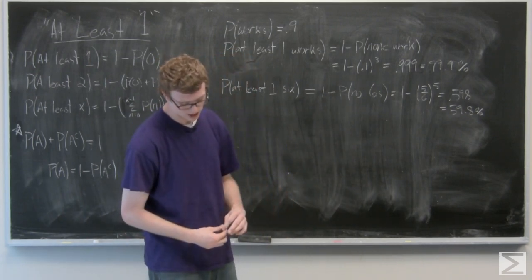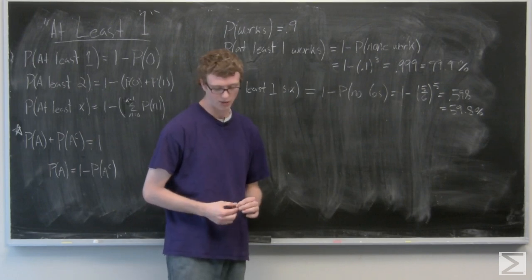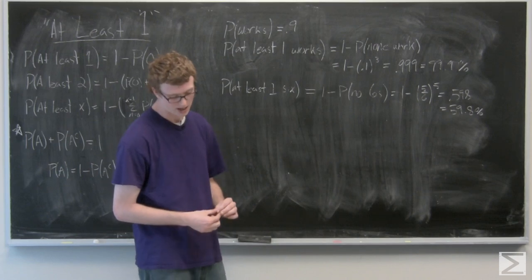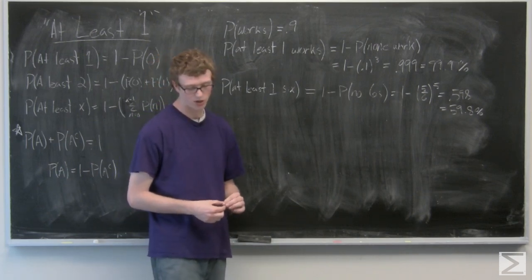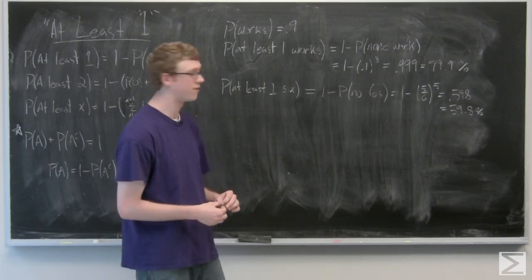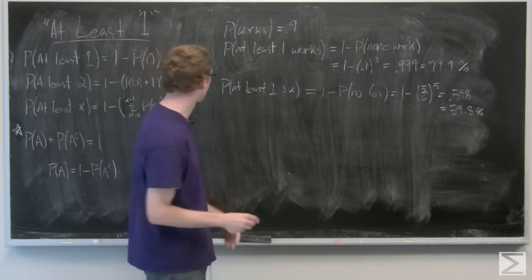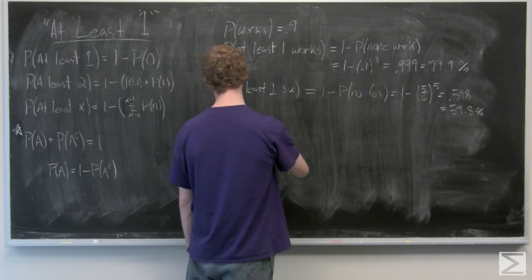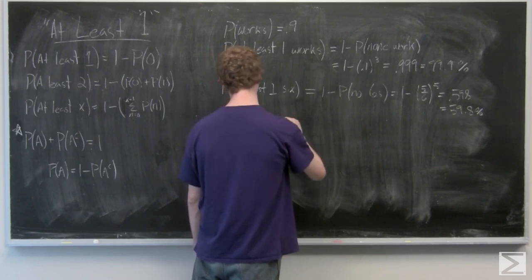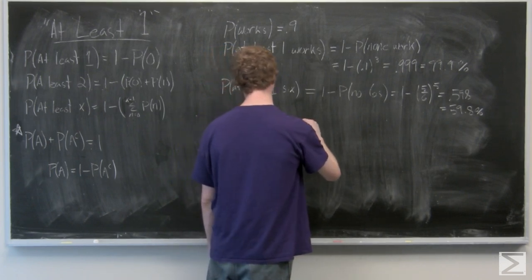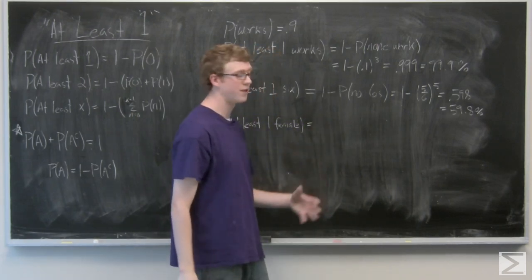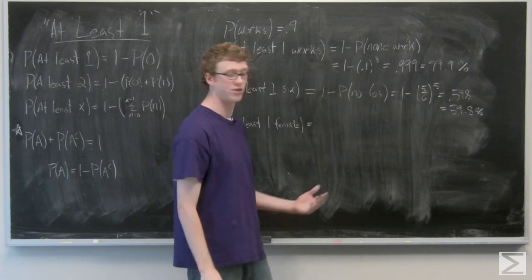The next one we have at a mathlete meeting, five men and three females attend and three are selected to compete in the next math competition. What is the probability that there's at least one female in the selection group? That's just one minus probability that there are no females, which is one minus probability that it's all males.